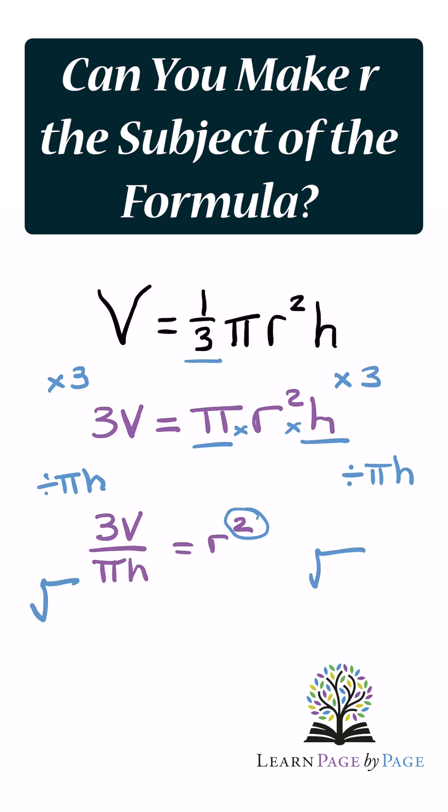So we take the square root of both sides, and that gives us root 3V all over pi h, and that equals r.